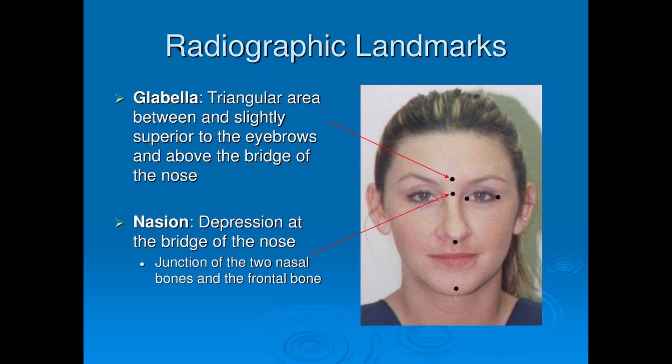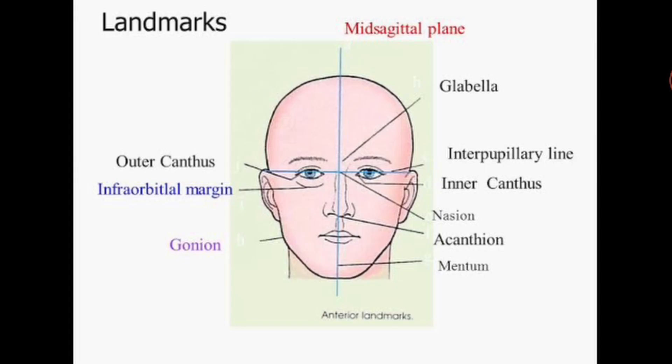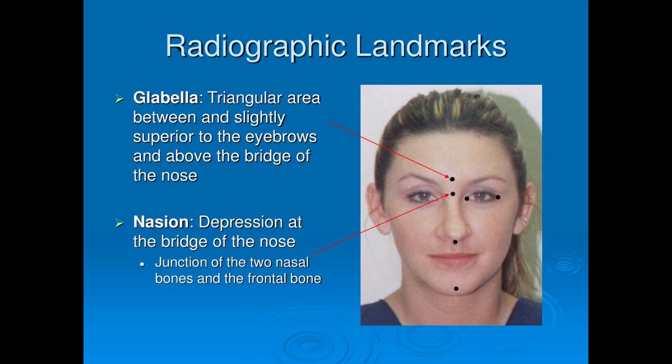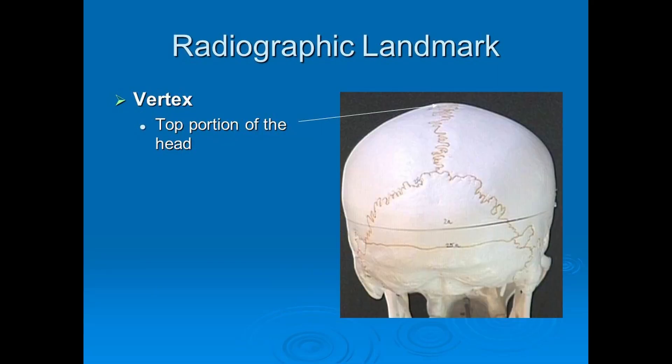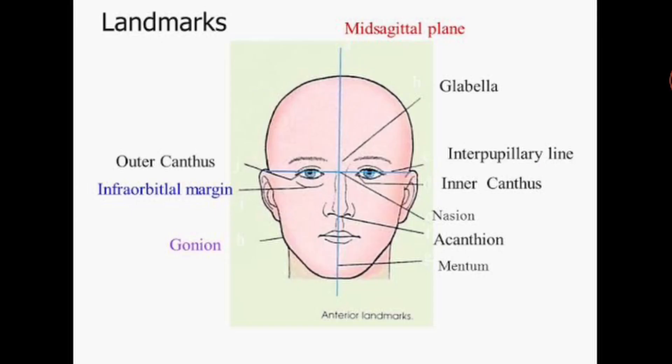You can see the nasion here, located between the eyes. Just above the nasion is the glabella — the bony prominence you can see here. Our next landmark is the vertex, which is the highest point of the skull in the midsagittal plane.